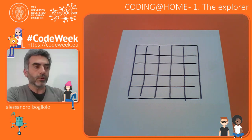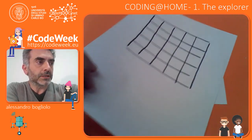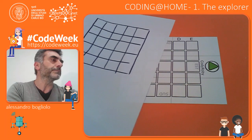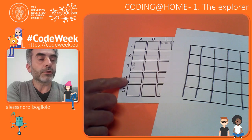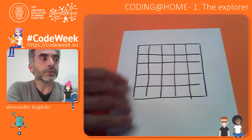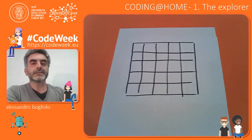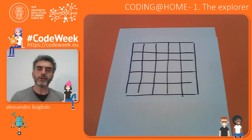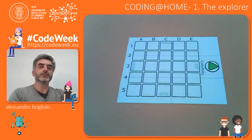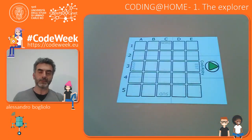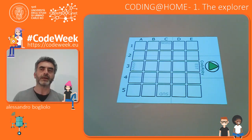The only rule — and also the common feature of this checkered board and this grid — is that it has to be a 5 by 5 grid. This means that we will have 25 squares, 25 boxes in our checkered board, and this is very important for playing our game which is called the Explorer.